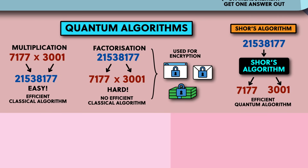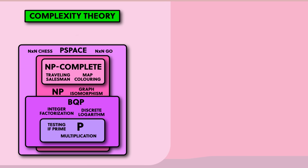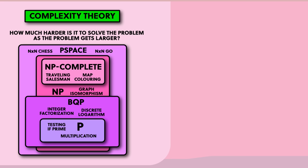But when I say a fast quantum algorithm, how fast, and how much faster than a classical computer would it be? Well to answer these questions we need to take a little detour into the world of quantum complexity theory. Quantum complexity theory is a subfield of computational complexity theory, which deals with the categorisation of algorithms, sorting them into bins according to how well they run on computers. The categorisation is based on how much harder it is to solve a problem as the problem gets larger. Any problem inside the P box is easy to solve with a classical computer, but anything outside it means we don't have an efficient classical algorithm to solve them, and factoring large numbers is one of these. But there's one box here, BQP, which is efficient for a quantum computer but not a classical computer — these are the problems that quantum computers will be better than classical computers at solving.